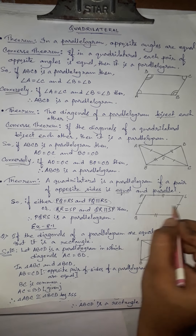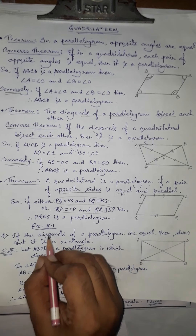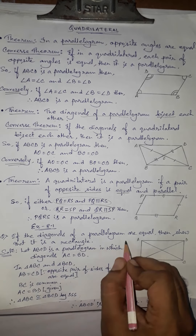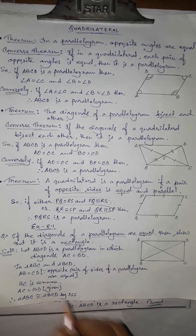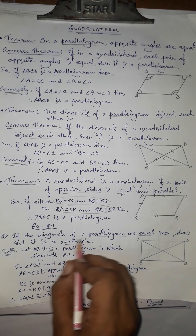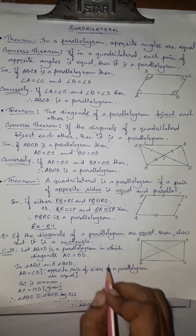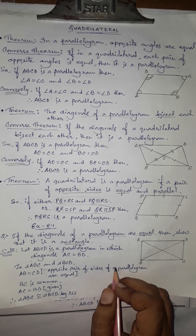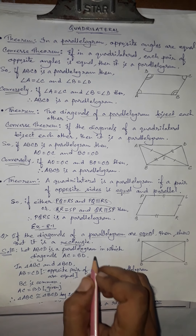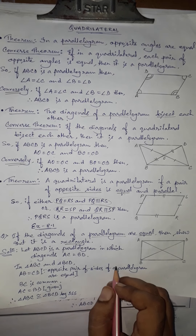In the exercise: if the diagonals of a parallelogram are equal, show that it is a rectangle. Given: parallelogram ABCD with equal diagonals AC equals BD. We need to show it is a rectangle. A rectangle is a parallelogram where at least one angle is 90 degrees — and all angles become 90 degrees. So if we prove any one angle is 90 degrees, and it is already a parallelogram, then it must be a rectangle.